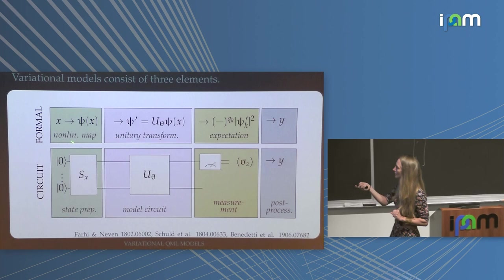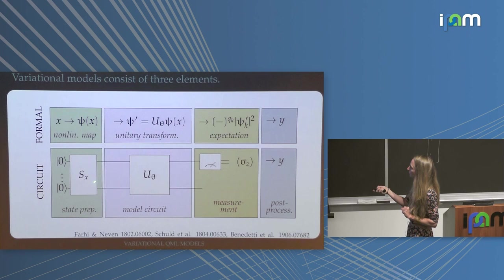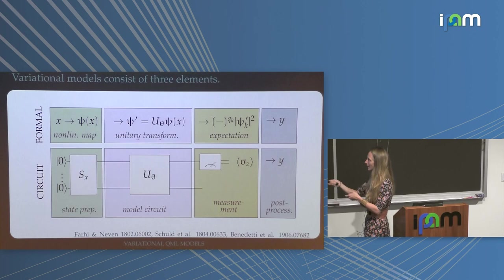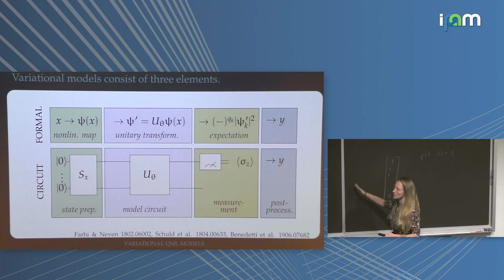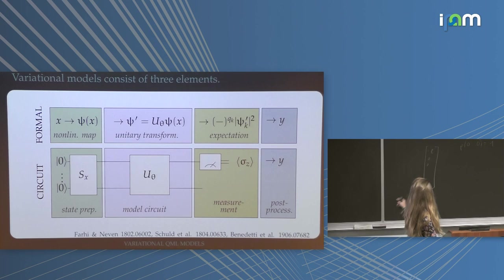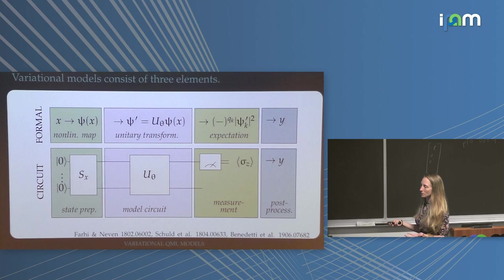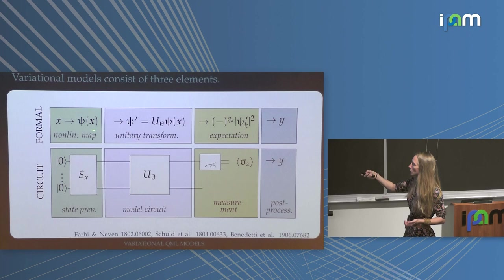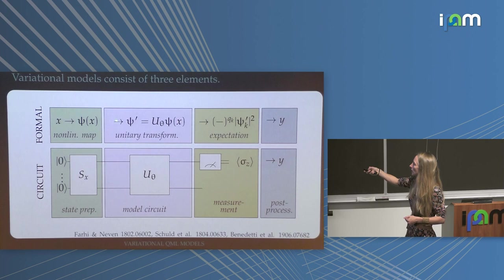There's a really beautiful review by Marcello Benedetti on using quantum circuits as machine learning models. Just to refresh: this circuit, if you enact S — a gigantic unitary matrix — on the initial state, this is a linear transformation. But as a mapping from X to the vector in my quantum system, this is a non-linear map. This is really important. This circuit maps X to a very high dimensional vector in Hilbert space — that's what the circuit does — and then the subsequent trainable part is a linear transformation of this vector.